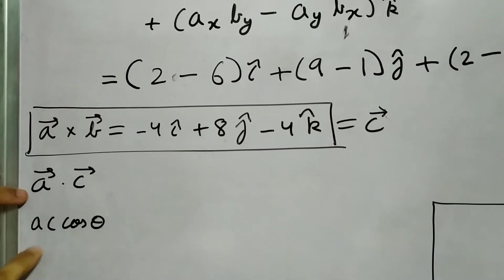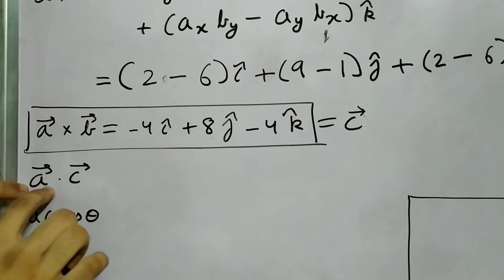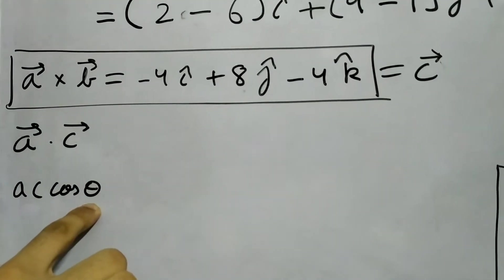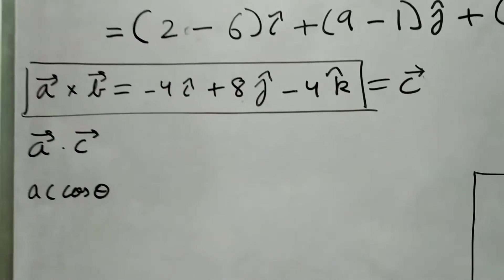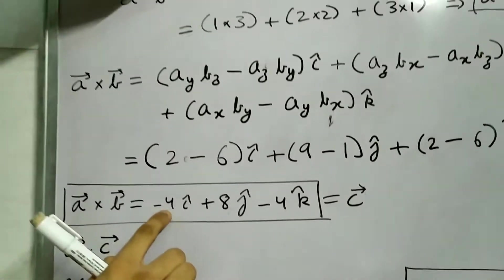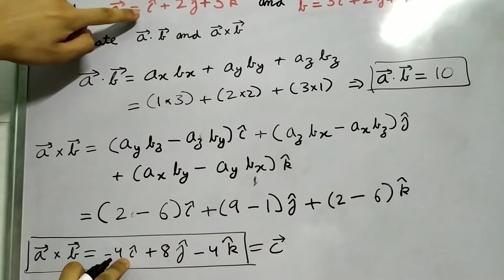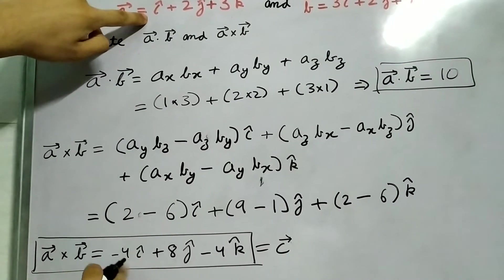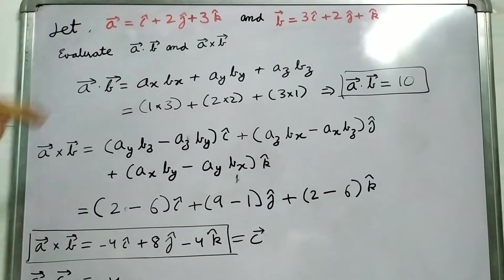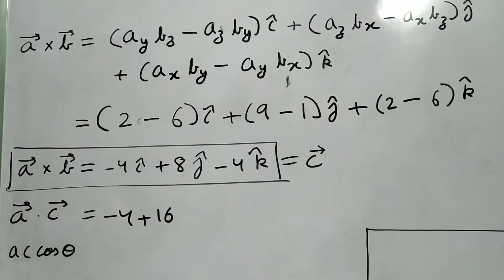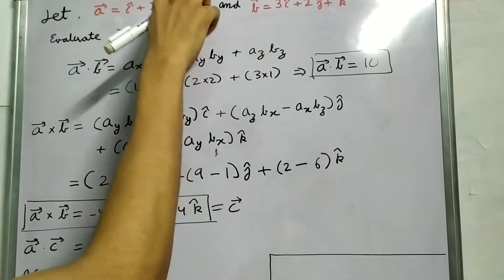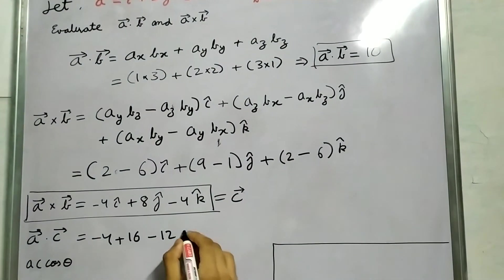The dot product is A C cos theta. So the magnitudes are clearly not 0. So if this turns out to be 0, which means theta, the angle between two of them should be 90 degrees, pi by 2 radians. Let's evaluate the dot product. Again multiply the components and add them up. So A_x C_x, this is minus 4, 1 into minus 4. Then multiply these two, we get plus 16. And then multiplying these two we get minus 12. 3 times minus 4 is minus 12. And which is 0.